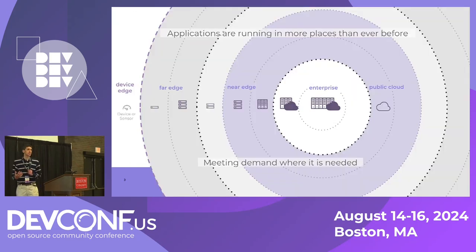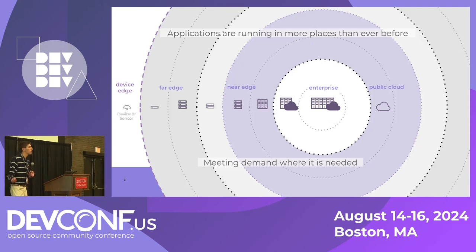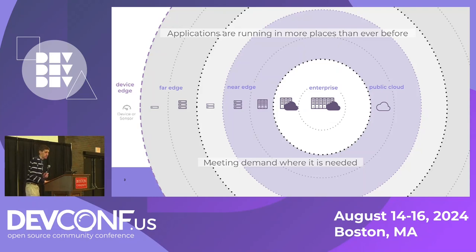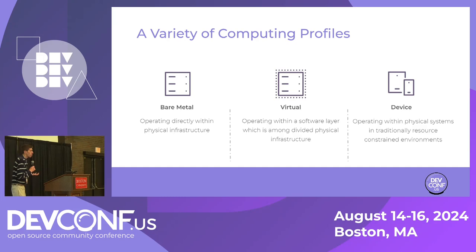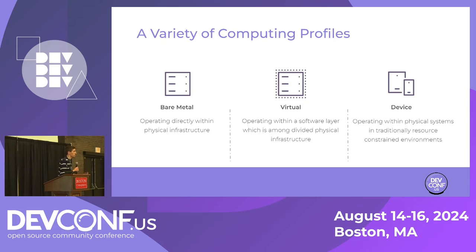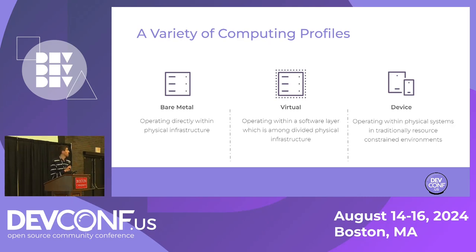Applications and systems are running in more places than ever before — everywhere from the data center to the public cloud to the edge. Being able to meet demand where it's needed is incredibly important. When operating in these different environments, they can be running on a number of different profiles, everything from bare metal infrastructure where compute runs directly on the hardware, to virtualized systems using emulation on an existing platform.